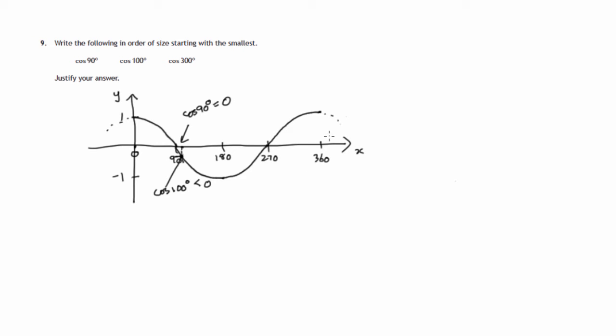And then if we hunt for 300, about there, look at the point on the graph. The height, since the graph is above the x-axis, the height is positive. So this would indicate that the cosine of 300 degrees is positive.